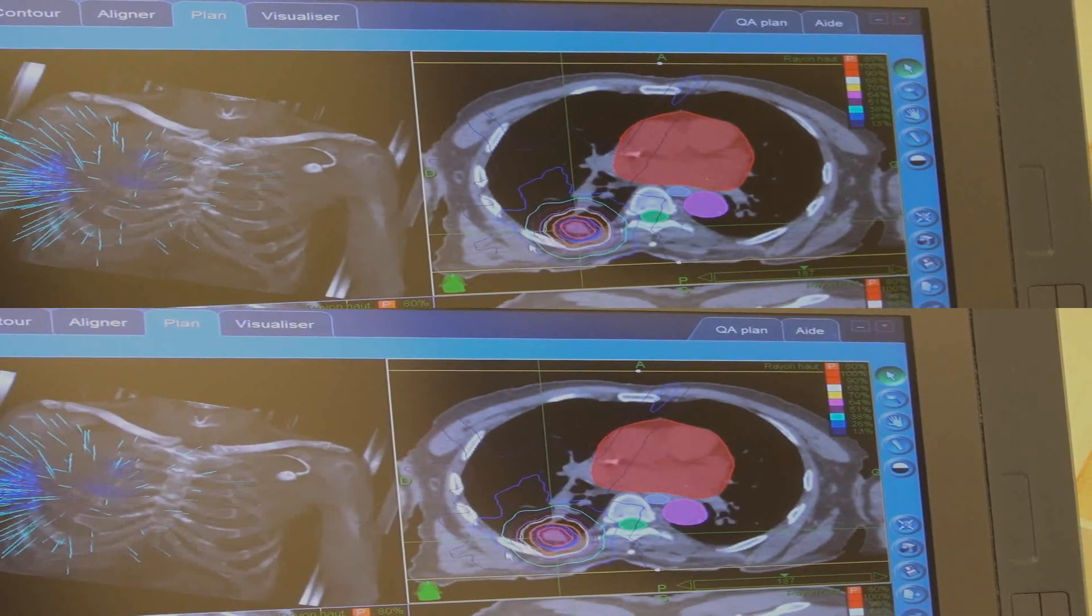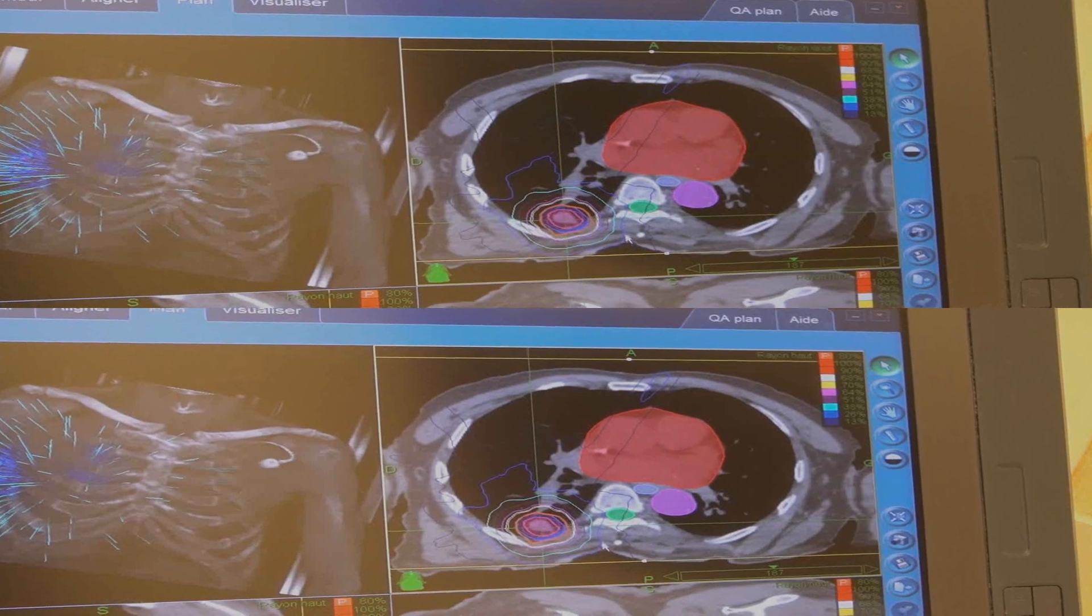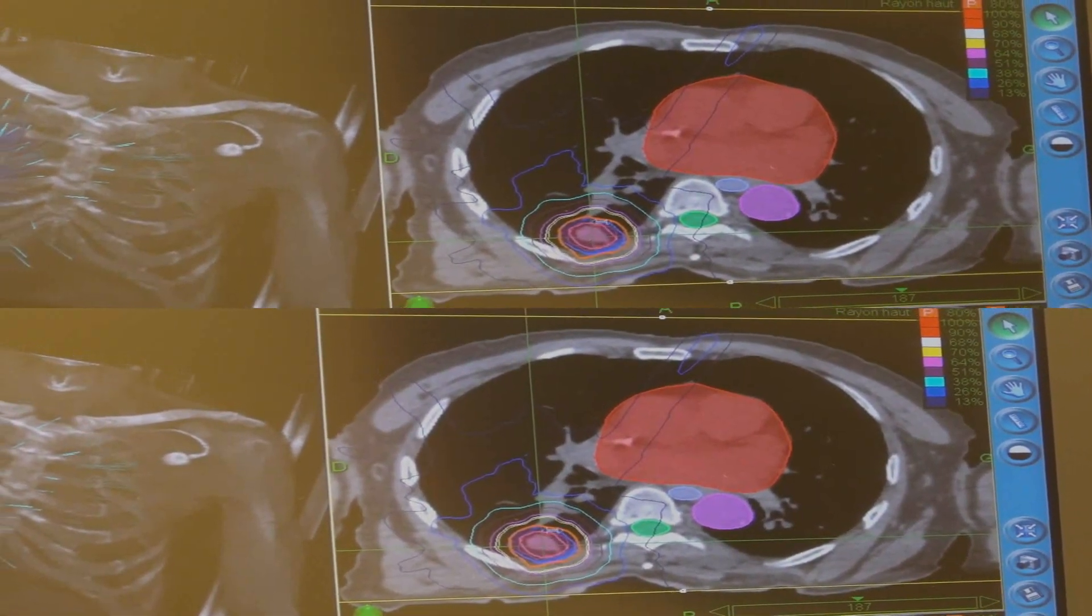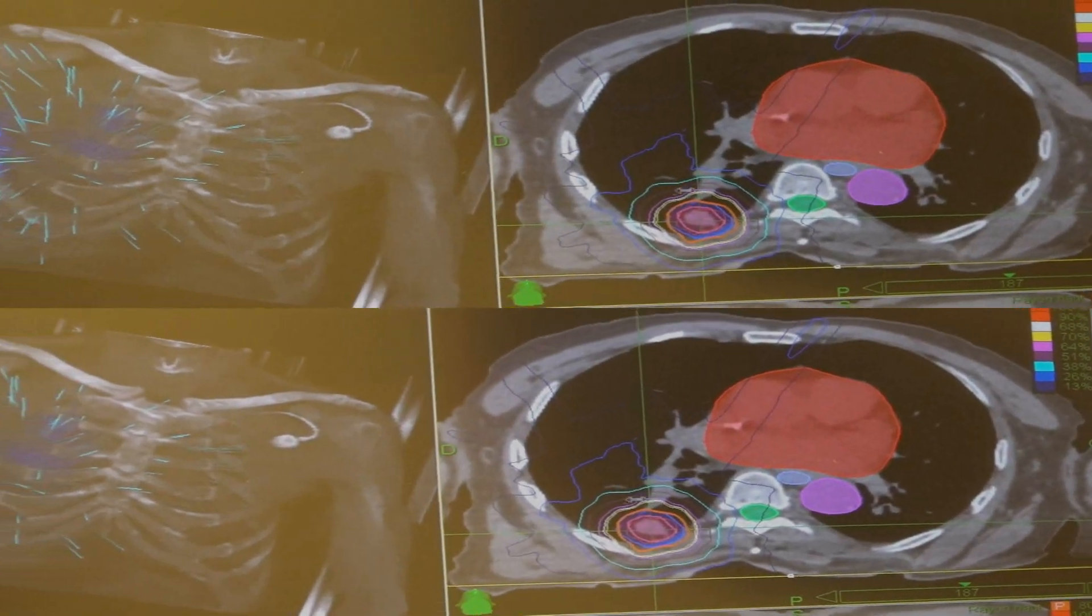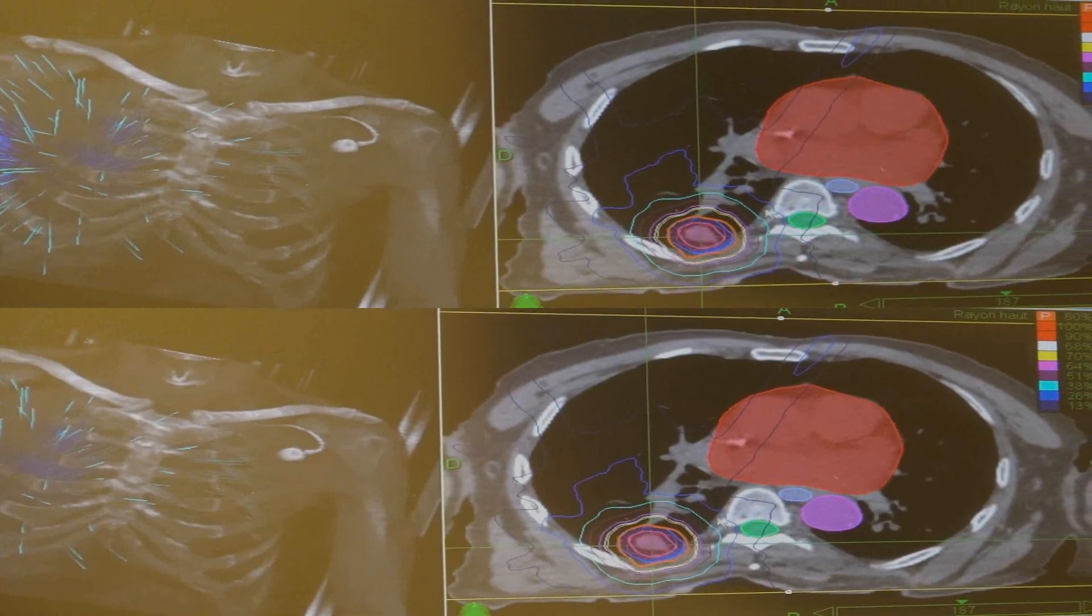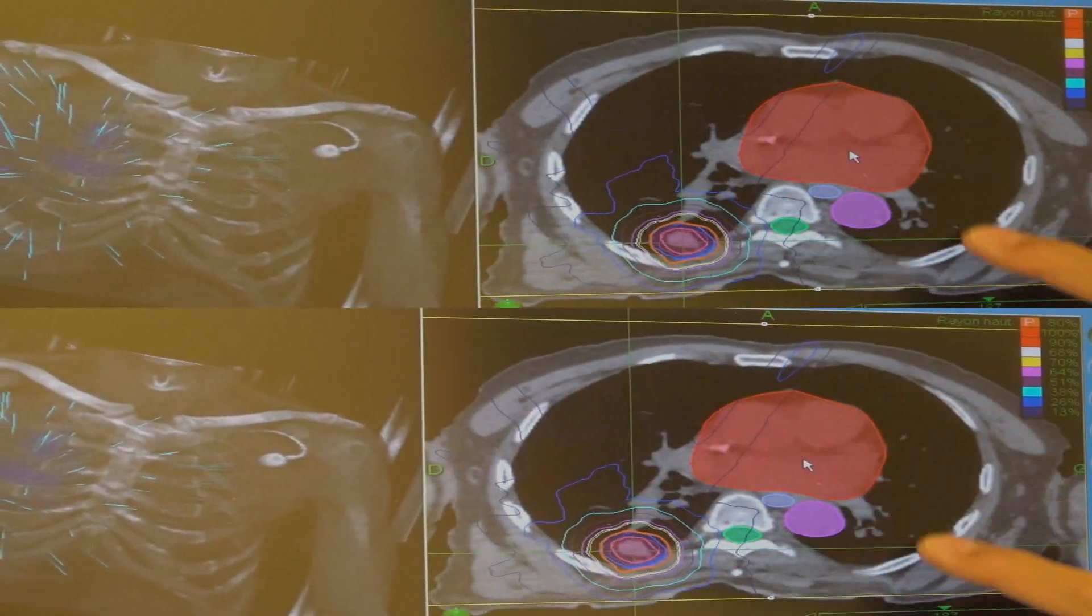Here we have the isodose lines—lines of the same dose value. The advantage of CyberKnife is to concentrate high doses around the treatment target, as we see here with the concentric isodose lines, while maximally preserving all the surrounding tissues.